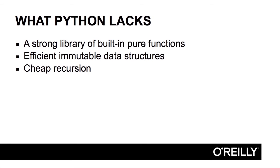However, at the same time, Python misses a lot of the features that are commonly useful in functional programming. First, it doesn't have a strong library of pure functions — most of the standard library is very object-oriented and imperative. It doesn't have efficient immutable data structures, and it doesn't have cheap recursion.